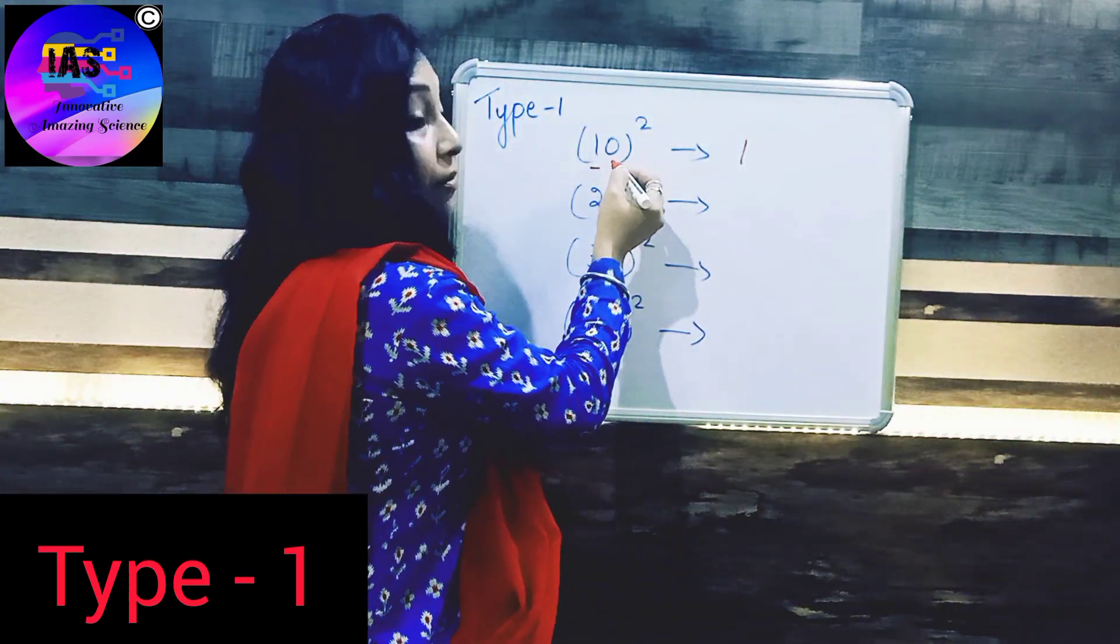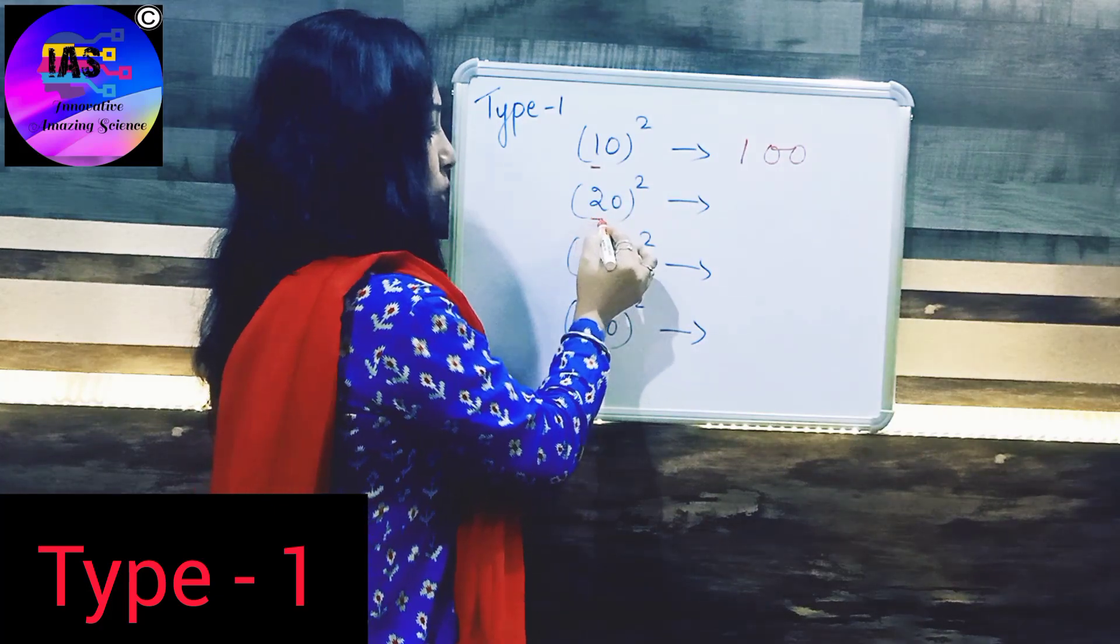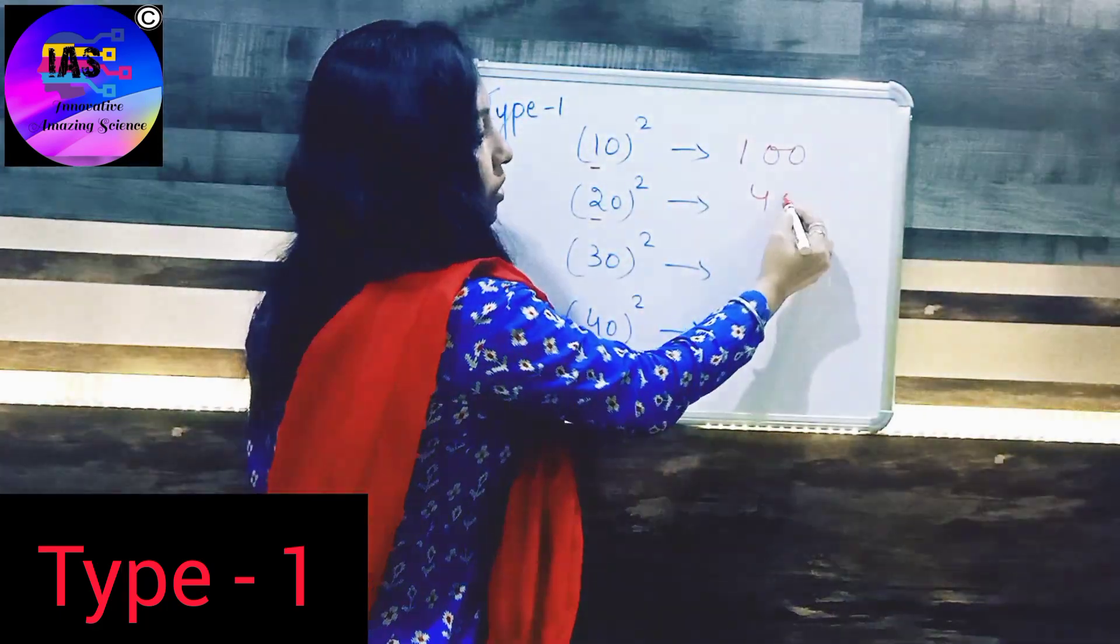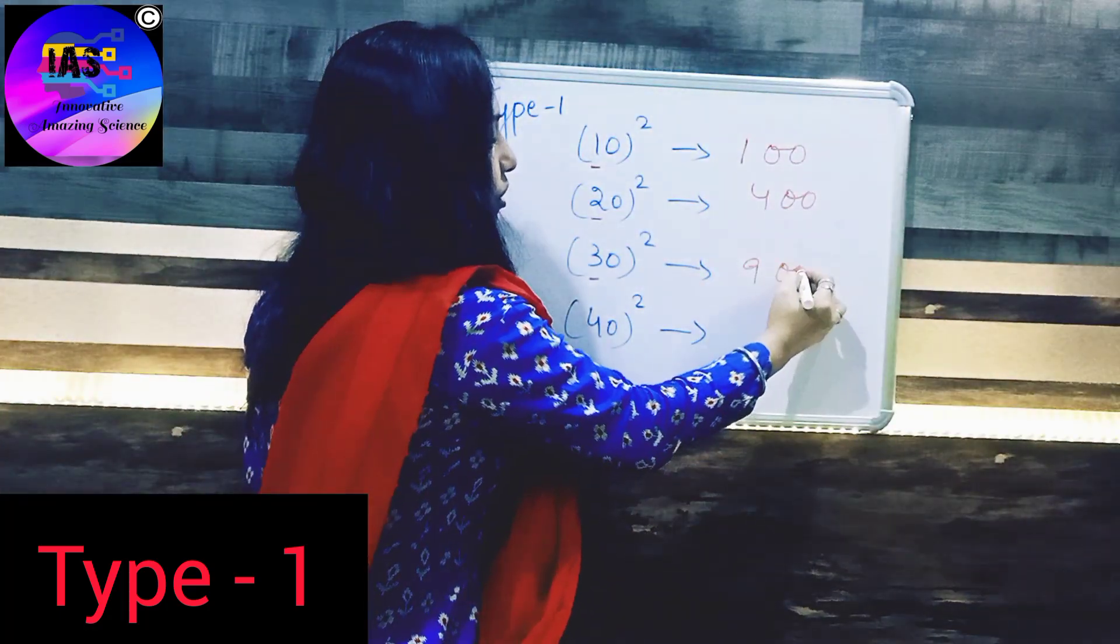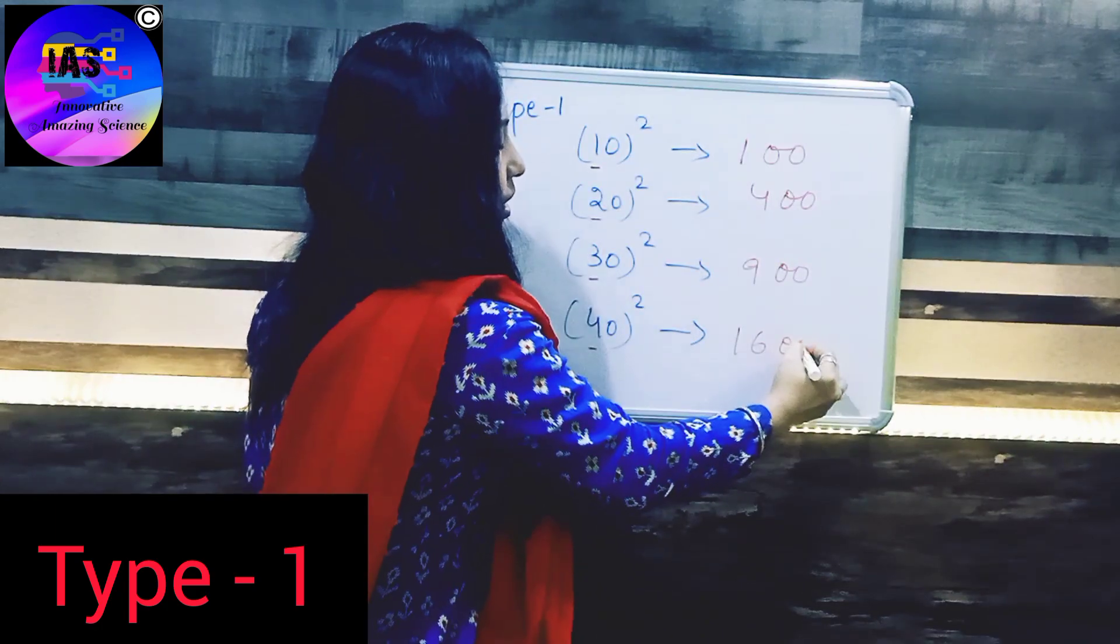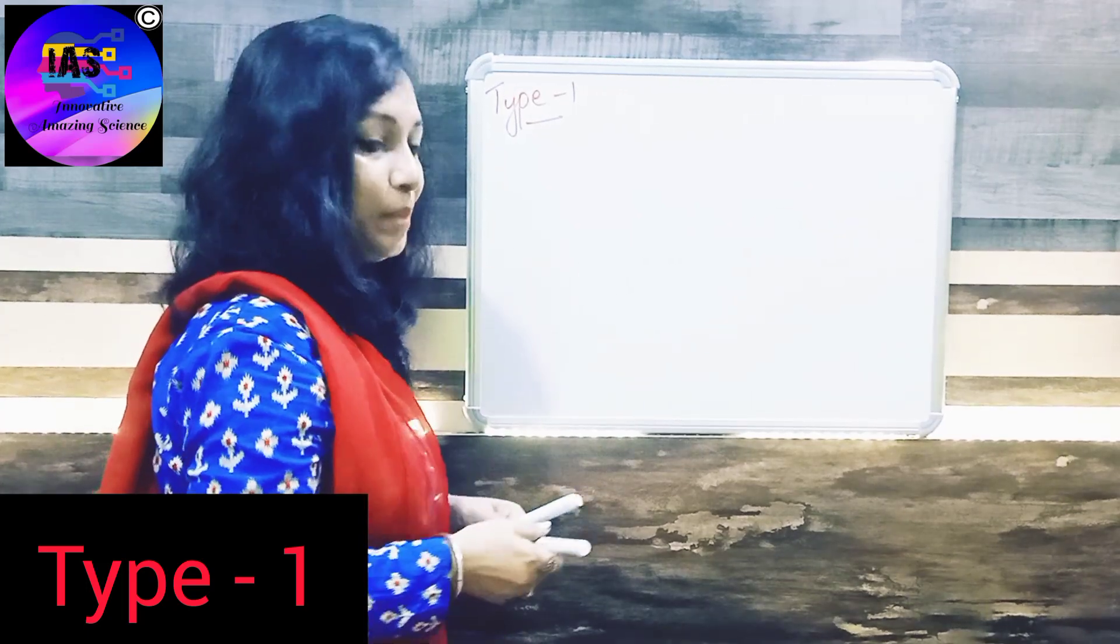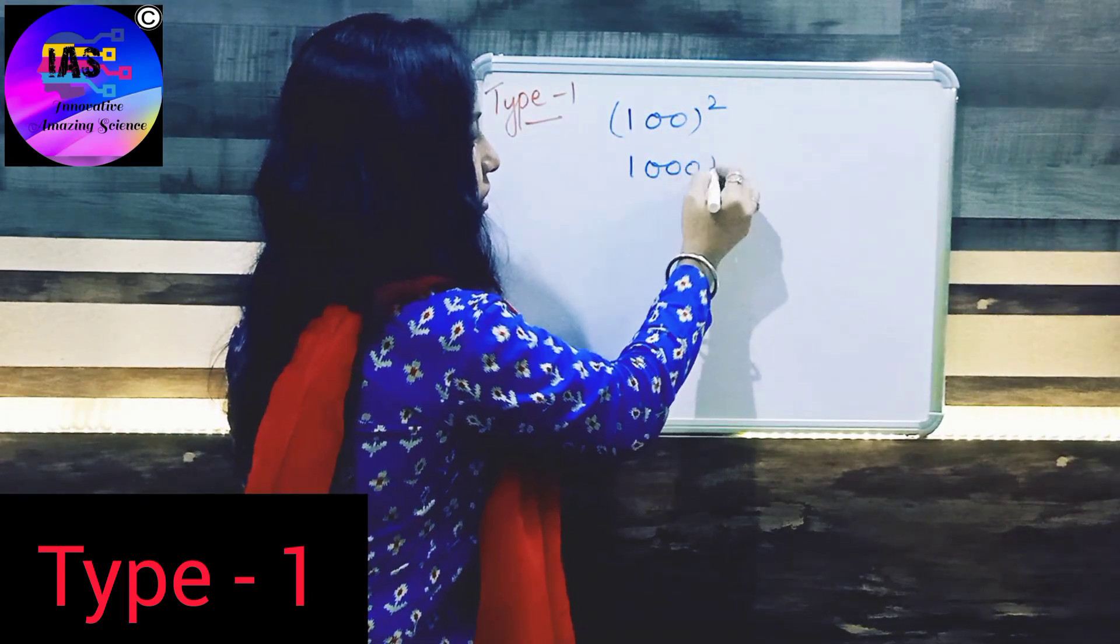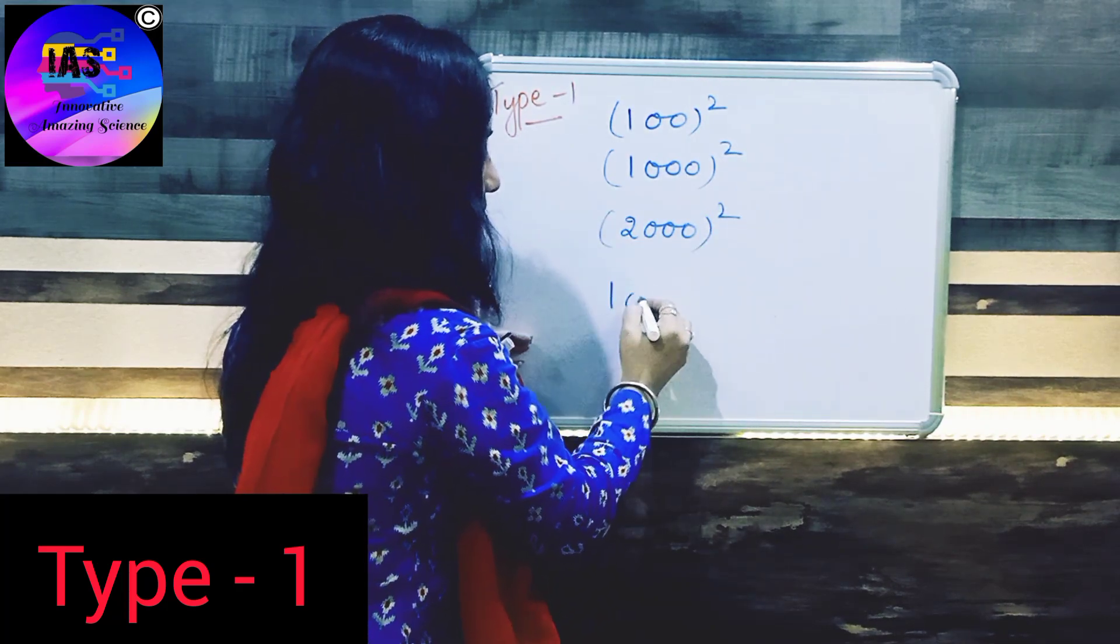How do we find out the answers? We know that 1 square is 1, and here you have 1 zero, but in the answer you have to write 2 zeros. In the second number, 20 has 1 zero, so 2 square is 4 and we write double zero. In the third number, 3 square is 9 and 2 zeros. And 4 square is 16 and zero becomes double zero. These are the answers.